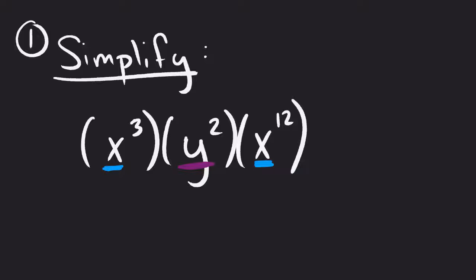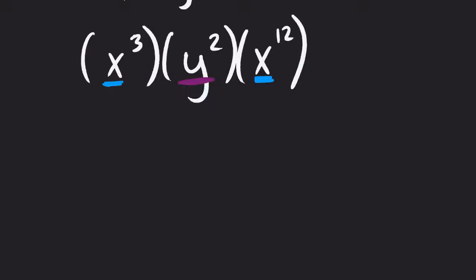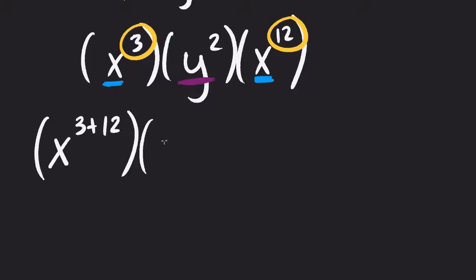Okay, so what this property says is it will not work for the Y because it's got a different base. But for the Xs, I can take the Xs, I can take these numbers that are up in the top, and I can add those together. And then for the Y, because it's got a different base, it stays exactly how it is.